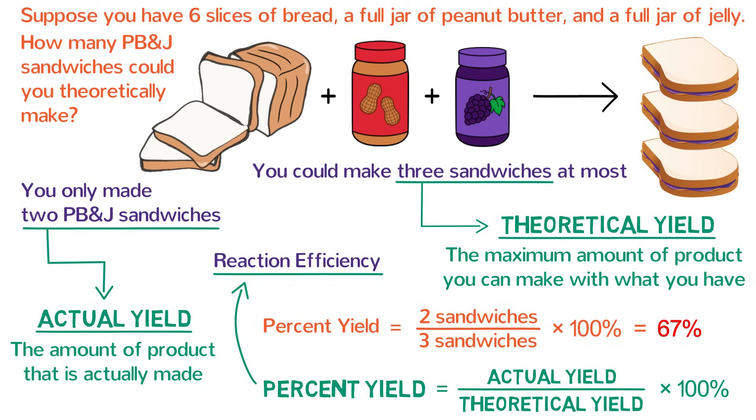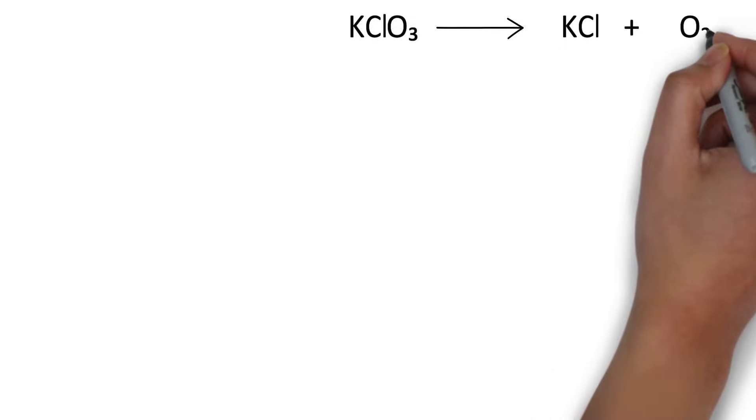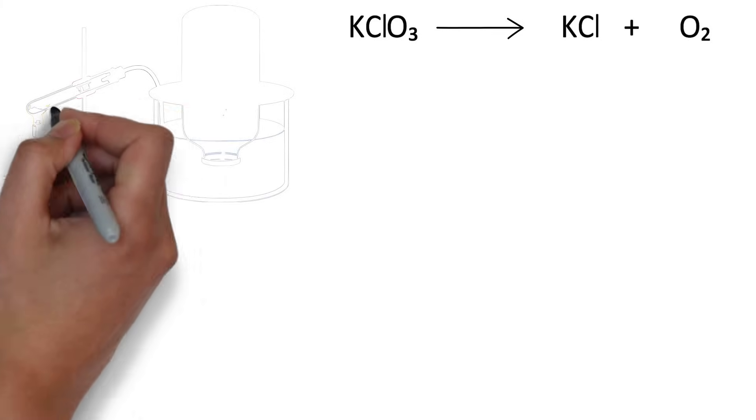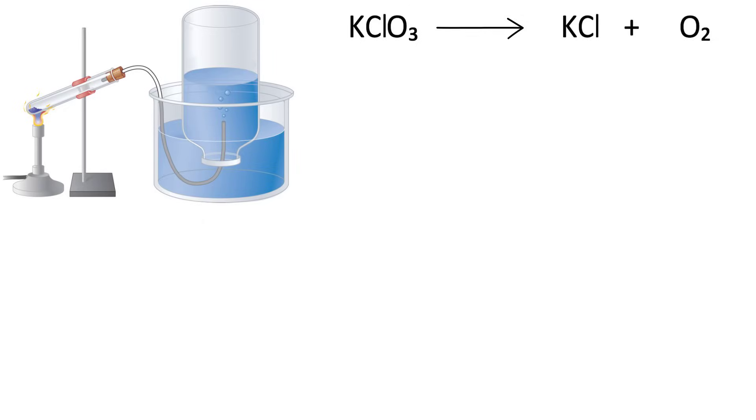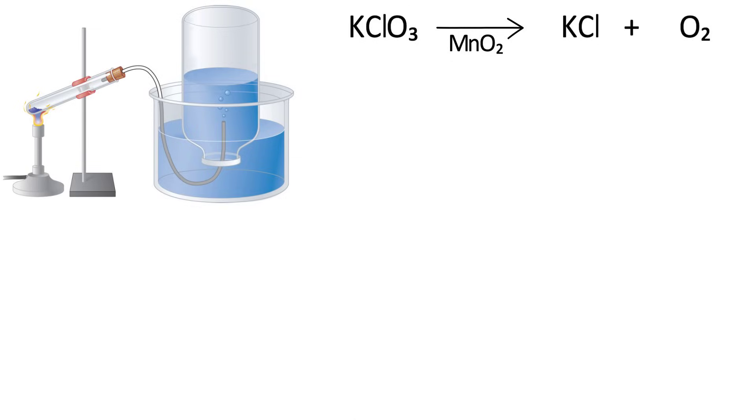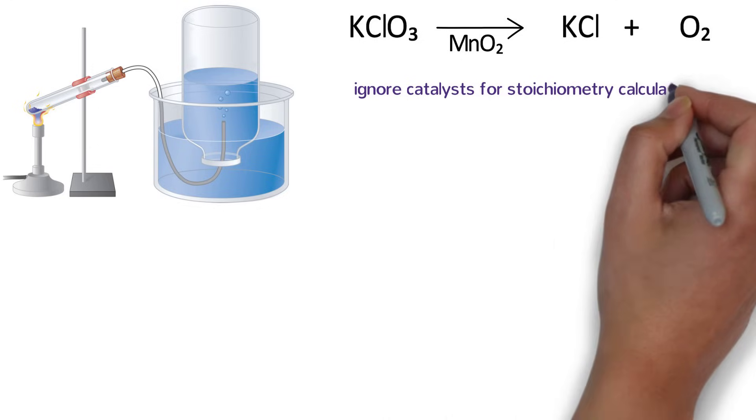Now we're ready for calculating the percent yield of a real chemical reaction. Consider the decomposition of potassium chlorate. Like other metal chlorates, it will decompose when heated, and the products of its decomposition are potassium chloride and oxygen gas. You can perform this reaction in the lab in order to make oxygen, but you need to be careful because small amounts of impurities or exposing potassium chlorate to organic compounds such as plastics, grease, or rubber could result in a dangerous explosion. In order to speed up this reaction, the catalyst manganese-4-oxide is typically added. Catalysts are often written below the reaction arrow. Remember that a catalyst speeds up a reaction without being changed itself. The manganese-4-oxide is not really part of the reaction, so we will ignore MnO2 for all of our stoichiometry calculations.